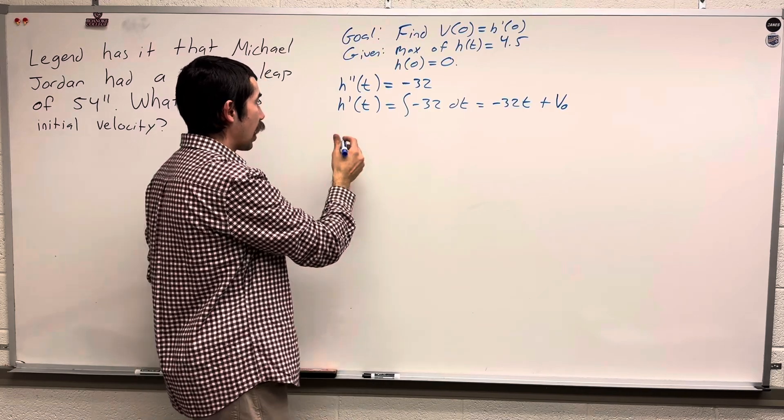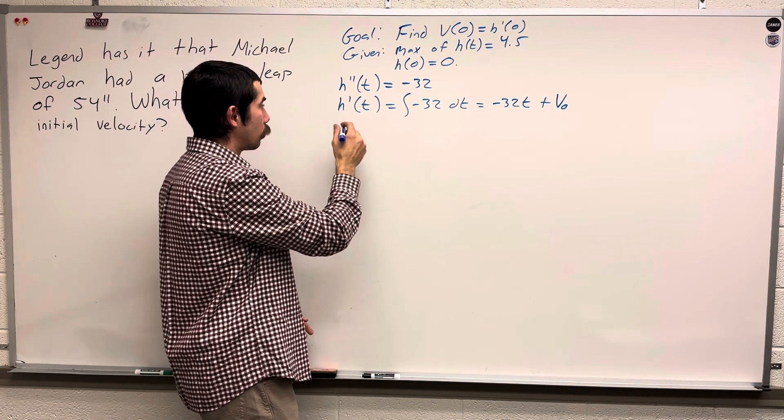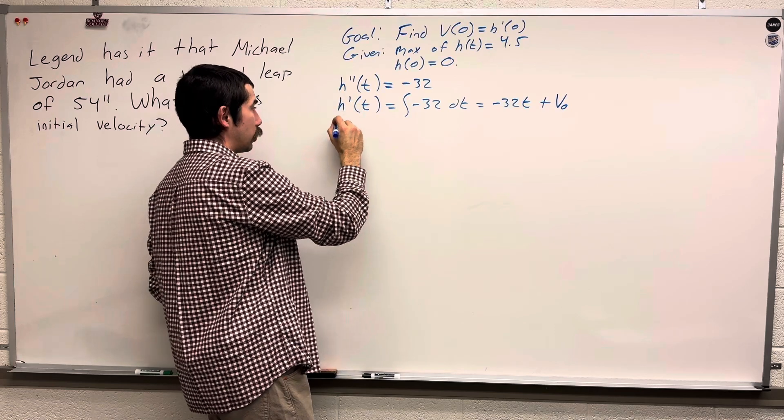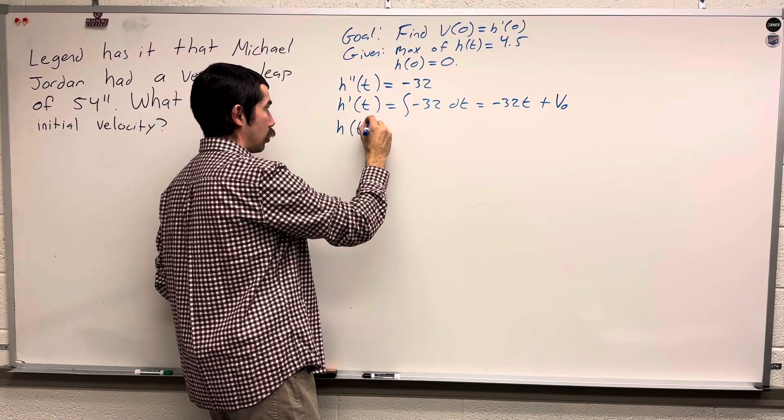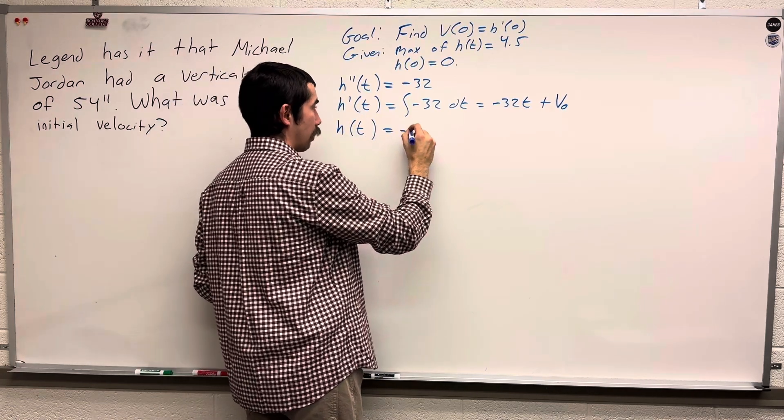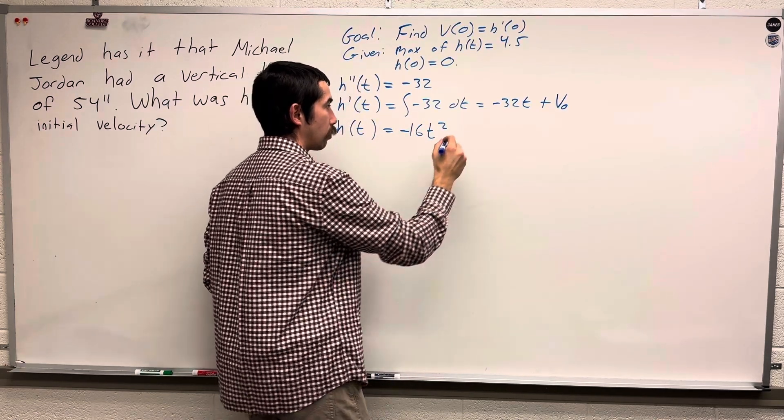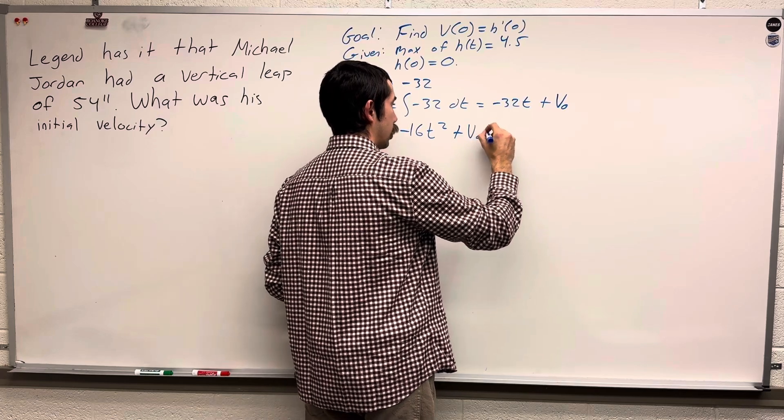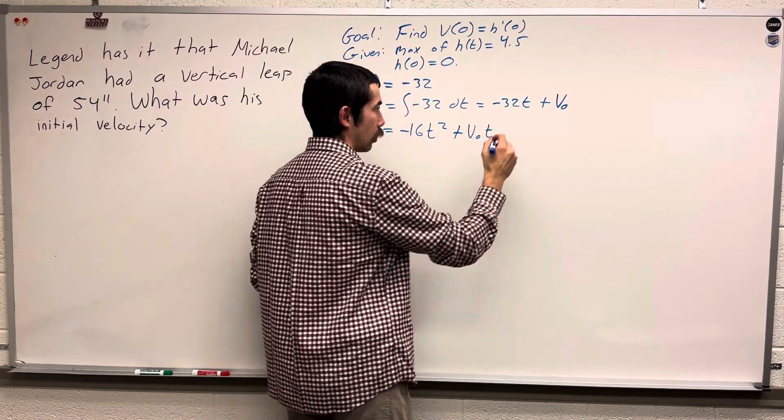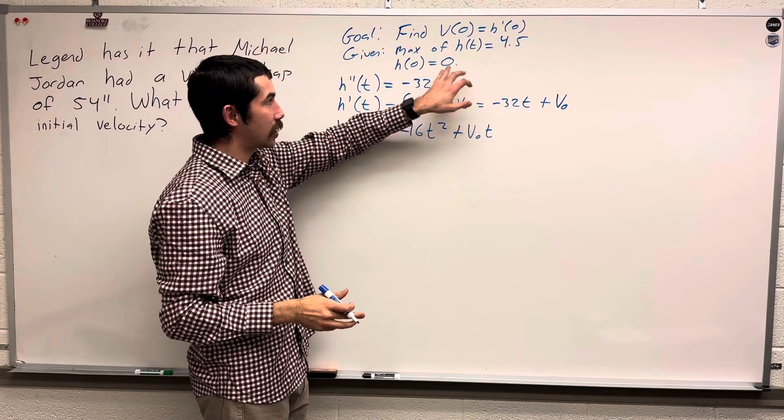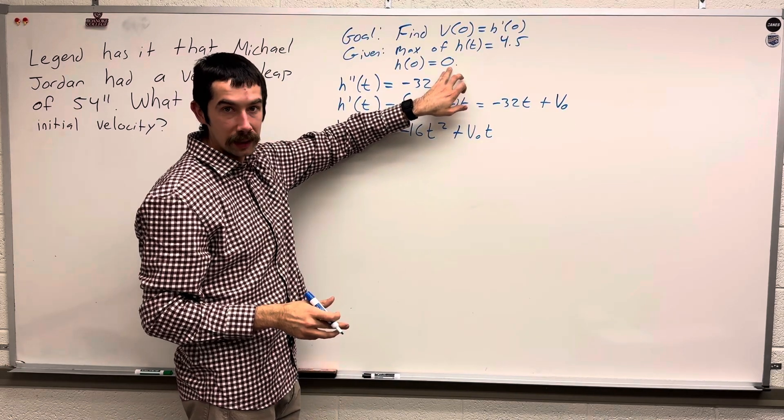And what else do we know? We know that h of t is equal to negative 16 t squared plus v0 t, plus a constant. The constant is going to be zero.